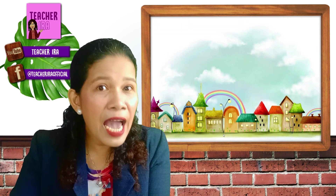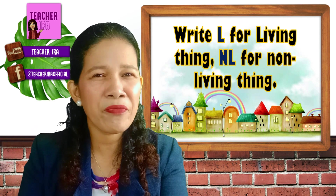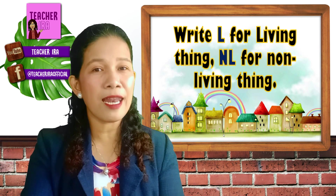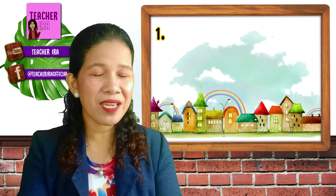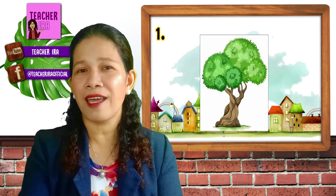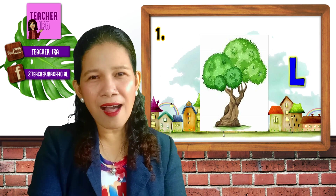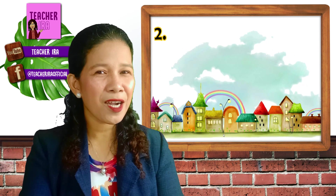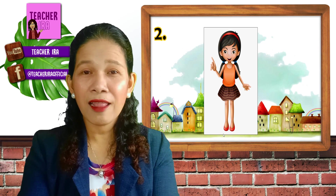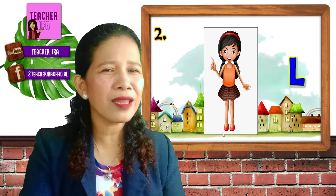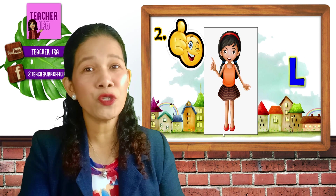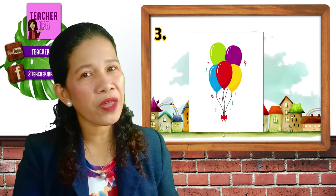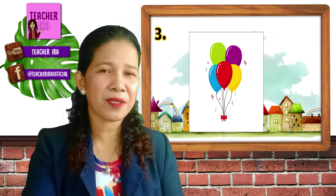Now let's look at some pictures. Write L for living thing and NL for non-living thing. Number one: a tree. Do you think it's a living thing? L or NL? Yes, it's an L — a tree is an example of a living thing. How about the next picture? A girl, just like some of you. L or NL? Of course, it's an L — another living being. You are all living beings, children. Remember that. Next, number three — balloons. Do you think balloons are living things or non-living things? Of course, it's NL — non-living things. Great job!